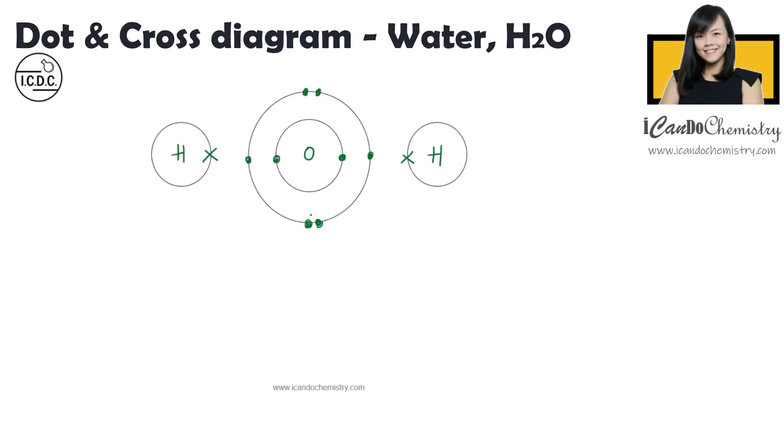So what it can do is each of my hydrogen just shares its one electron and oxygen shares two of its electrons to each of the hydrogen. So a dot and cross diagram for a water molecule will look like this.